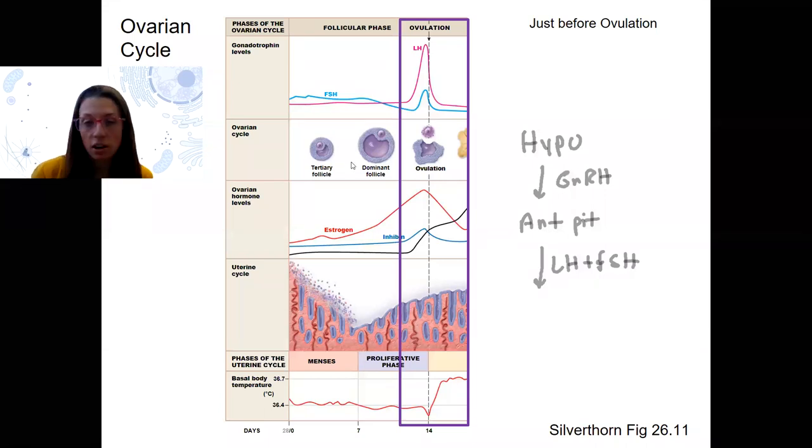Now, just before ovulation, things are going to change. We still have our same HPG axis here. Add in ovary again, ovaries. It's still the follicles, mature follicle at this point.